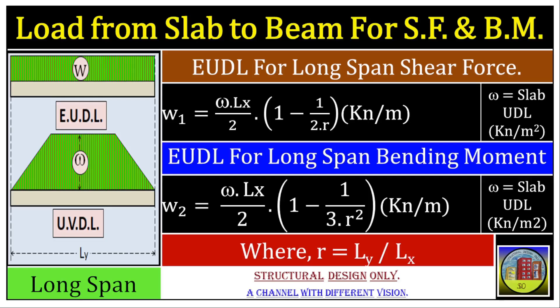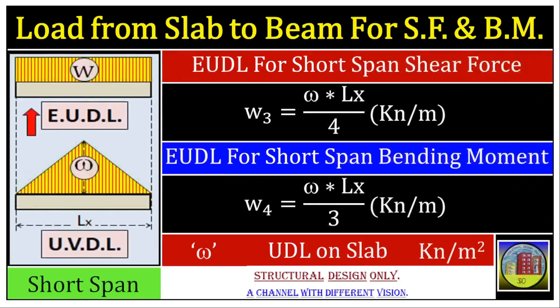These equations simplify the analysis of shear force and bending moment in the beam due to the trapezoidal load from the slab. To summarize, we learned about EUDL in the context of a slab beam, and saw how a trapezoidal load distribution on the slab can be converted into an equivalent uniformly distributed load acting on the long beam. Now switching over to the next slide — in the previous slides we focused on EUDL for long spans.